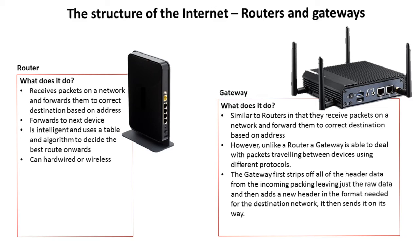Two very important bits of hardware to get your head around which make the internet work are routers and gateways. Routers receive packets on a network and forward them to the correct destination based on the address in that packet. It forwards things on to the next device — it's an intelligent device and it uses a table along with an algorithm to decide which of the routes it has is currently the best. It can be hardwired or it can be wireless.